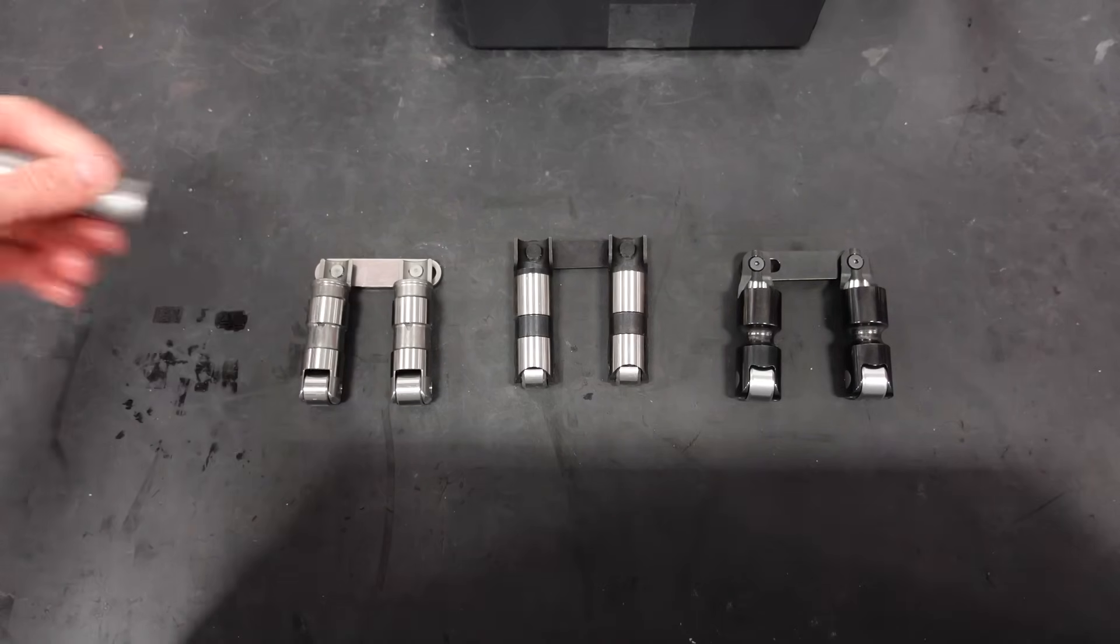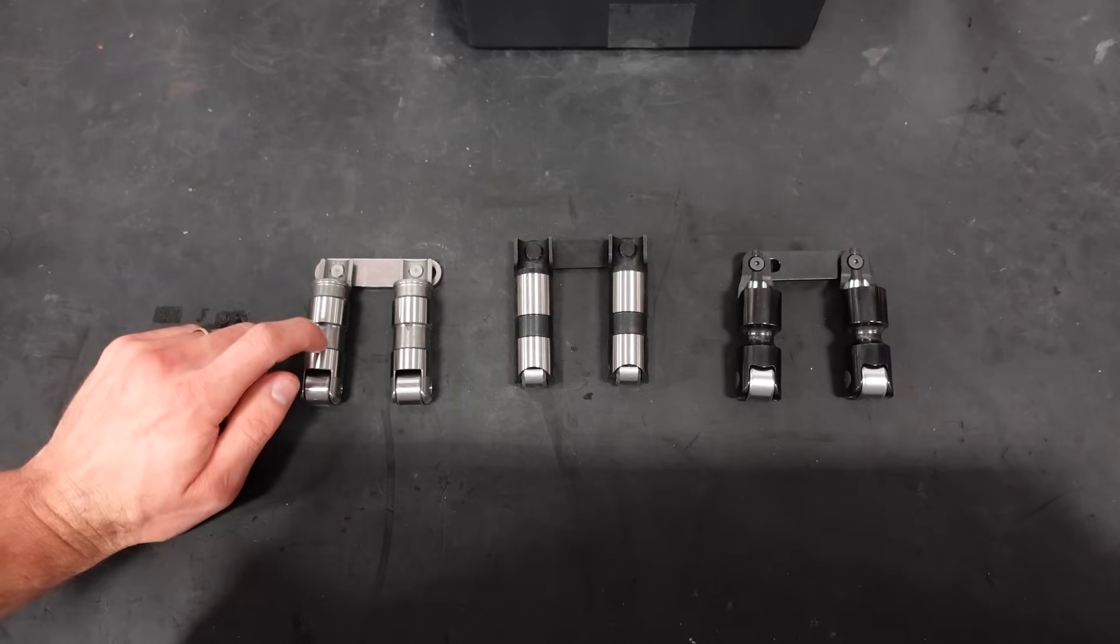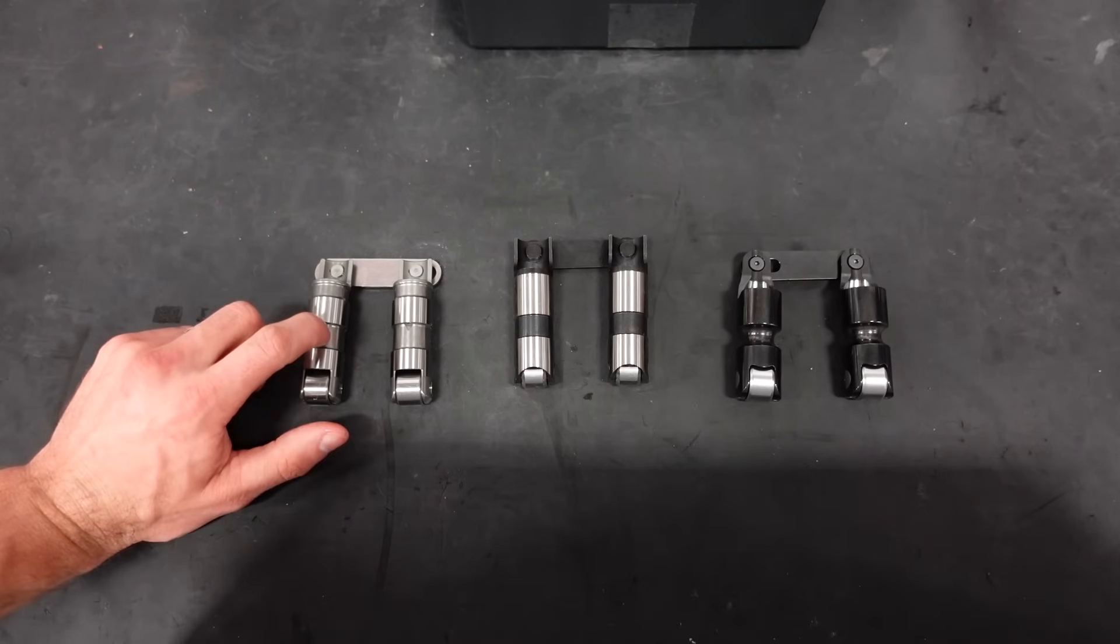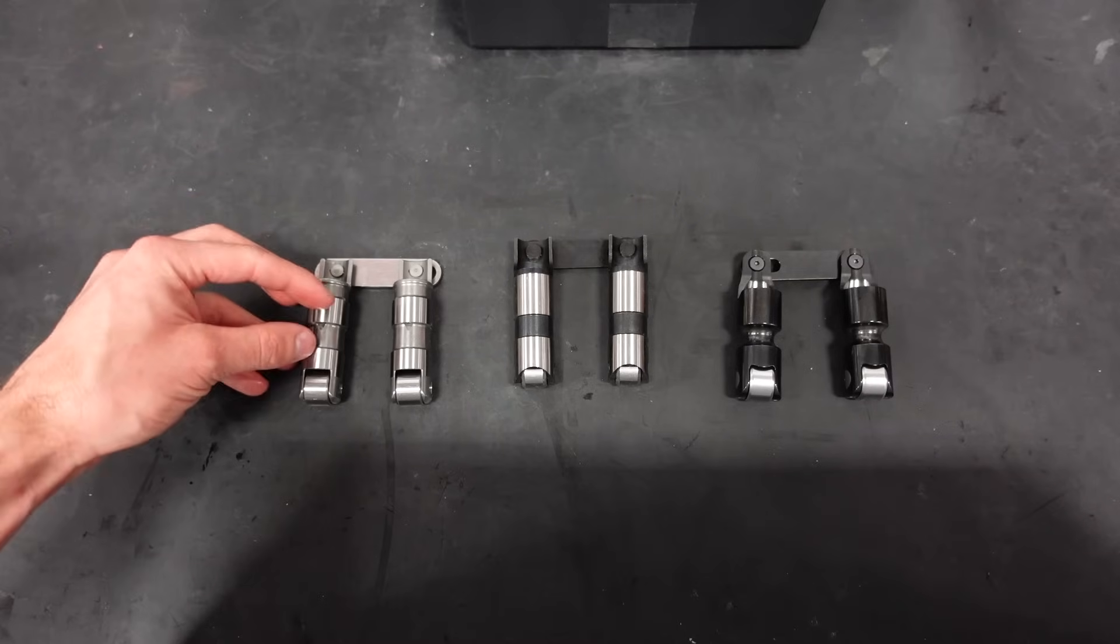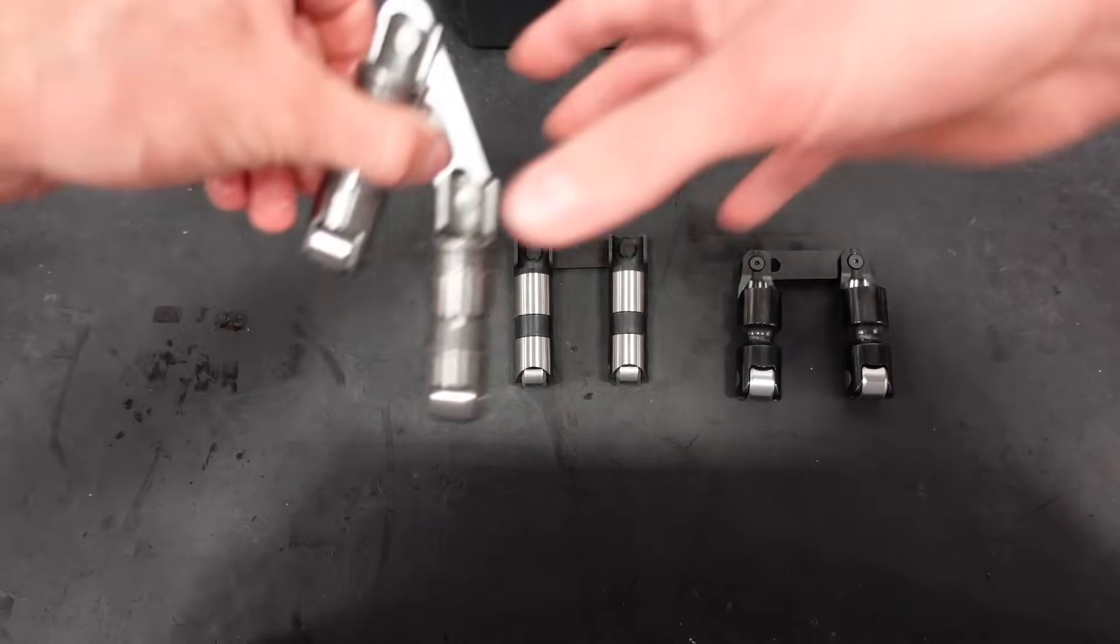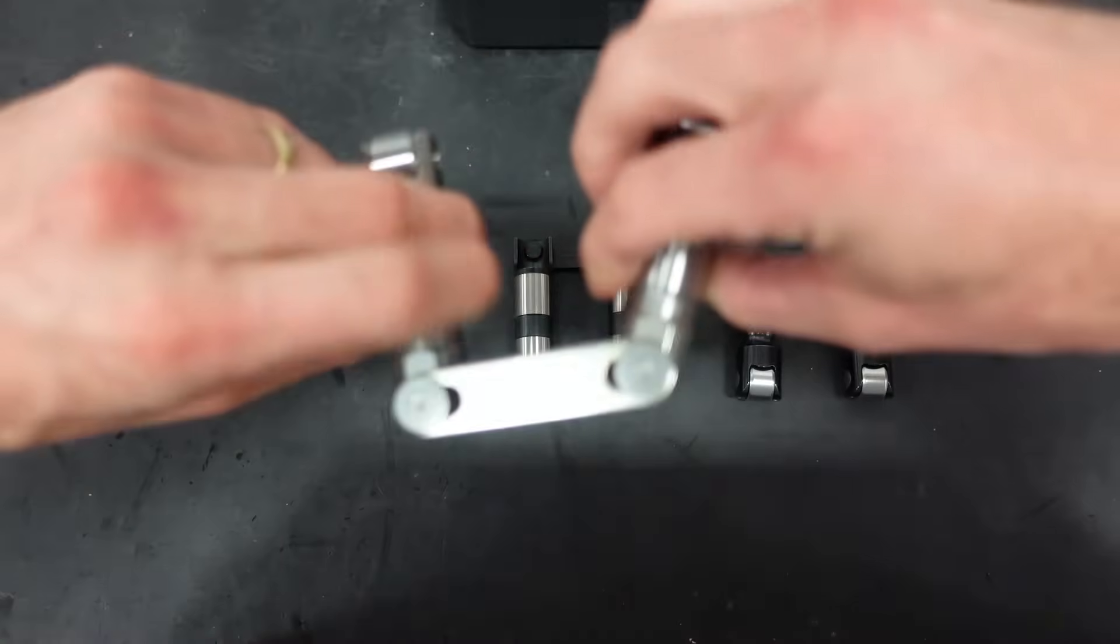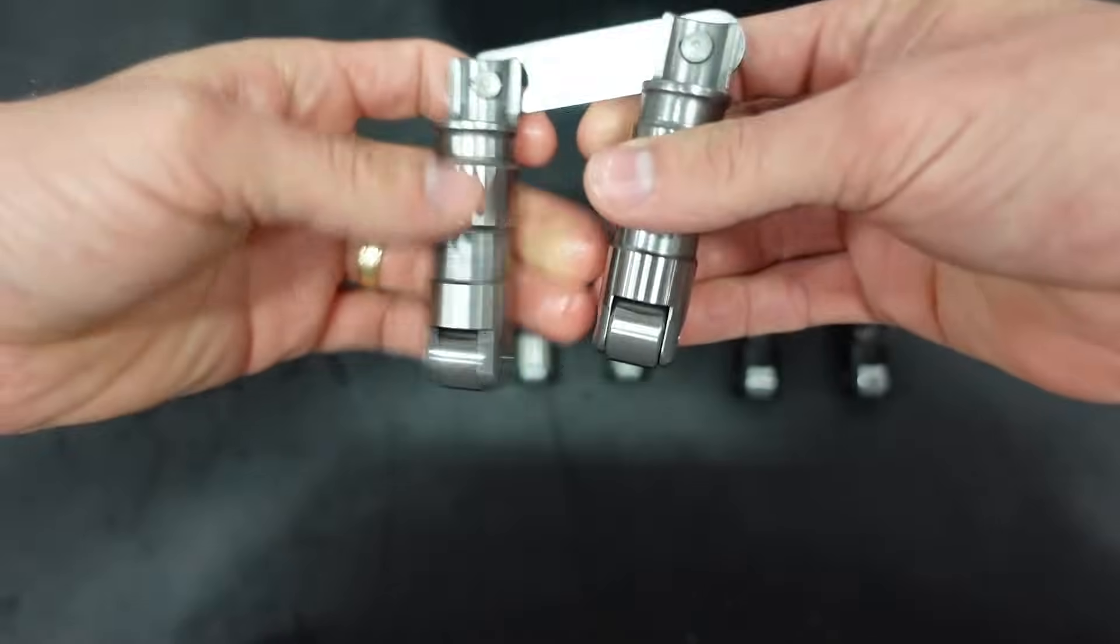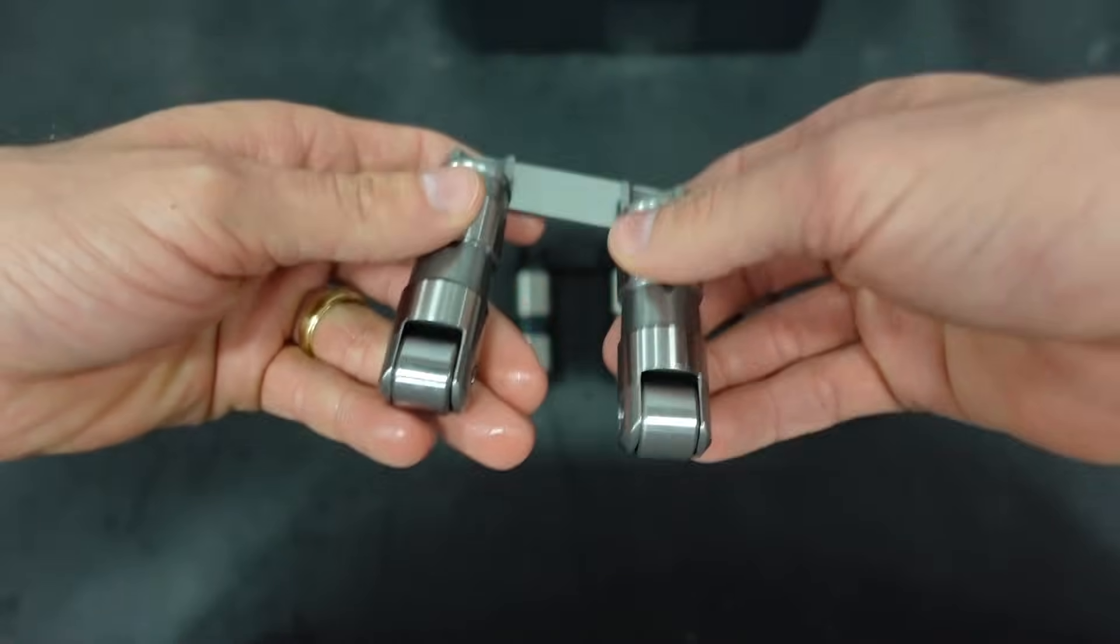Moving up, this is a hydraulic lifter, of course. Moving into this guy, we have an aftermarket Gaterman link bar lifter. It has larger axles built into it, it has a stronger steel body, and of course, we have that link bar design. With the link bar, both lifters are tied together, so they cannot rotate or turn. They have to stay perfectly in line with the camshaft.